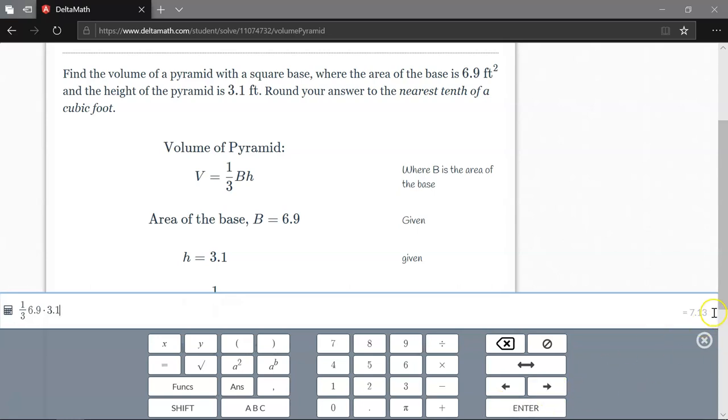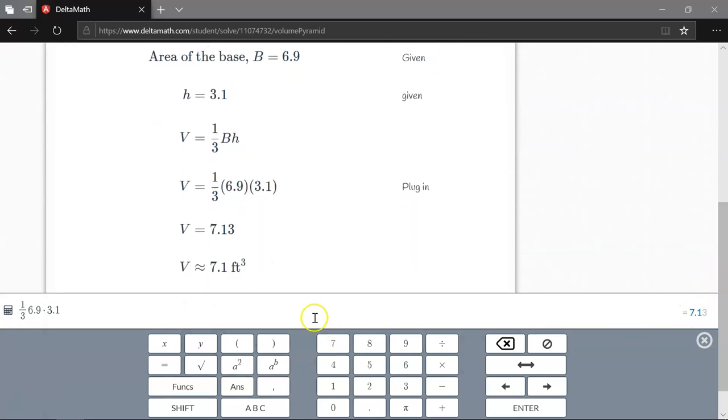And here I have the answer, 7.13. But it says to round to the nearest tenth. That's the digit after the decimal. So my final answer is going to be 7.1 feet cubed.